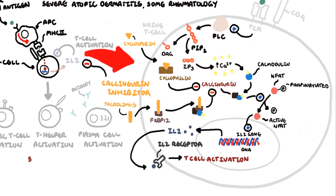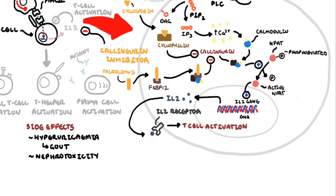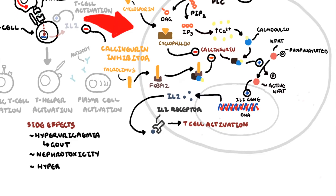Calcineurin inhibitors have a number of side effects: hyperuricemia, increasing the risk of gout; nephrotoxicity; hypertension; hyperlipidemia; and hyperglycemia. The side effects are more common with certain types of calcineurin inhibitors.